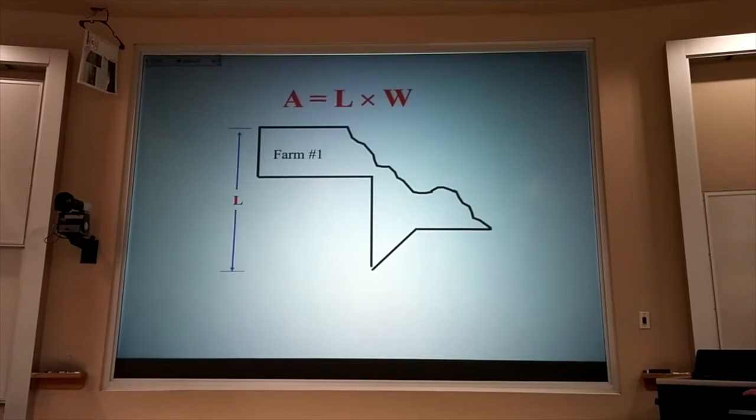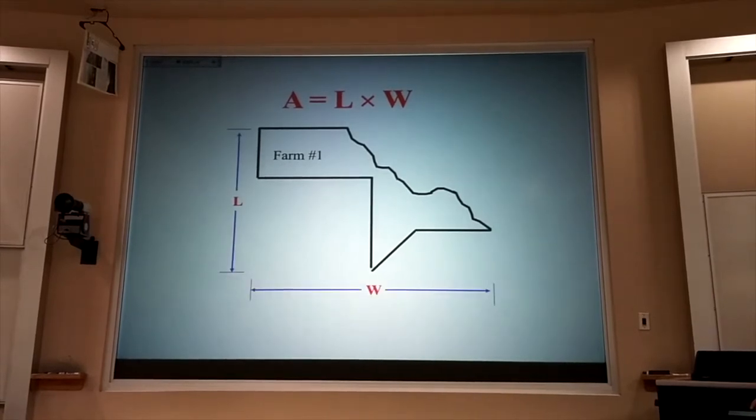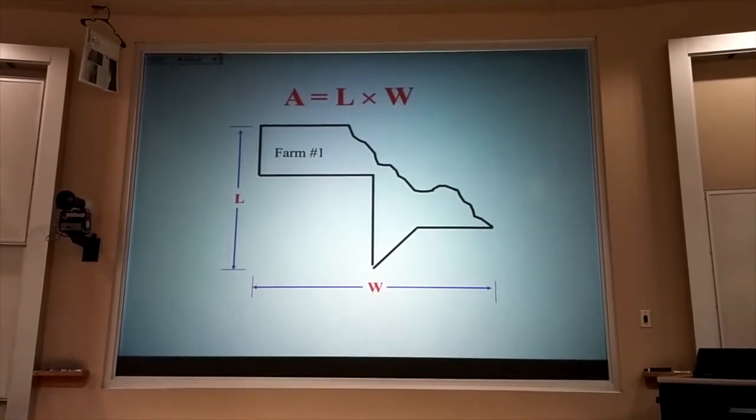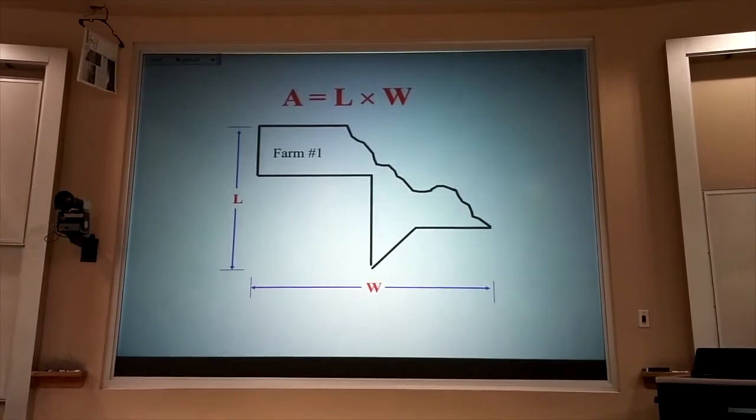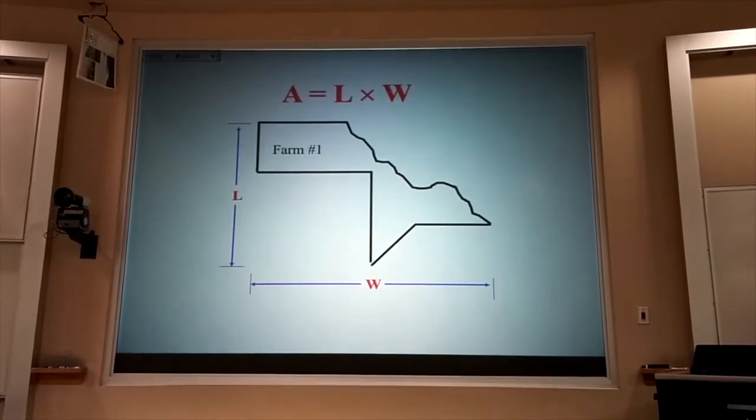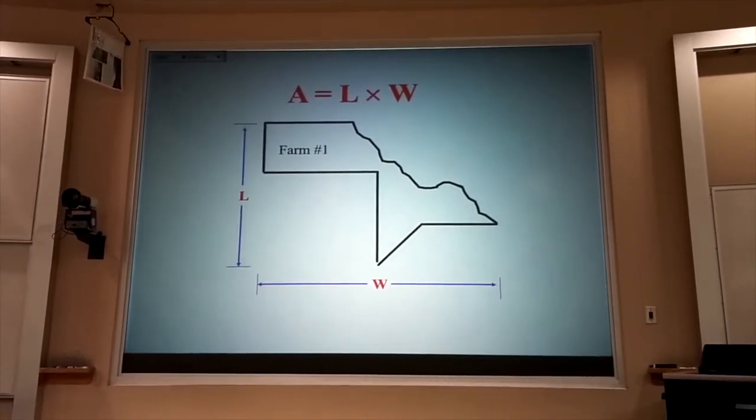You want to buy that farm because, man, lots of length, lots of width. So clearly this formula works for rectangles, but not so much for odd shapes.